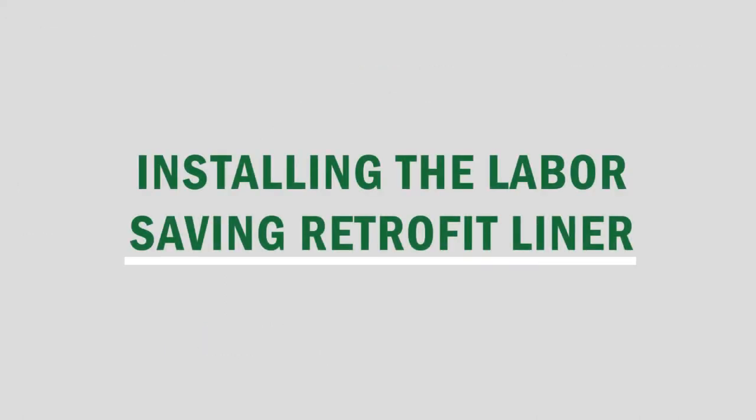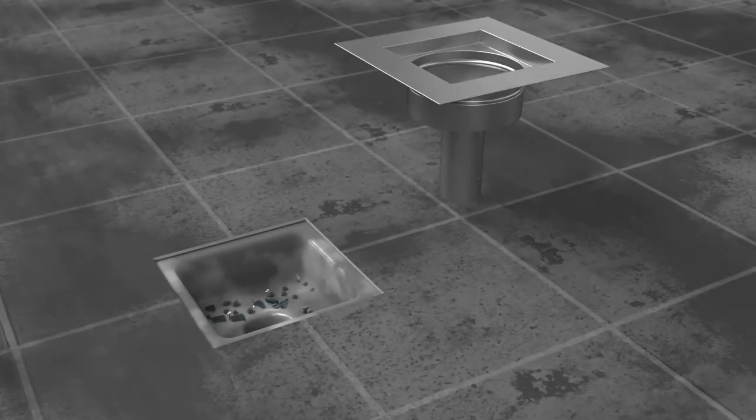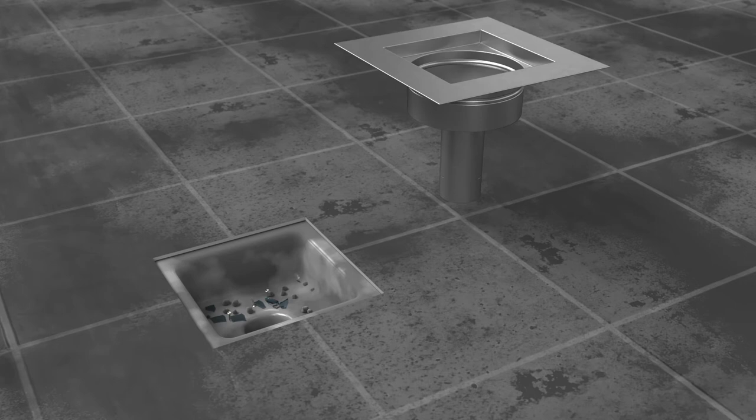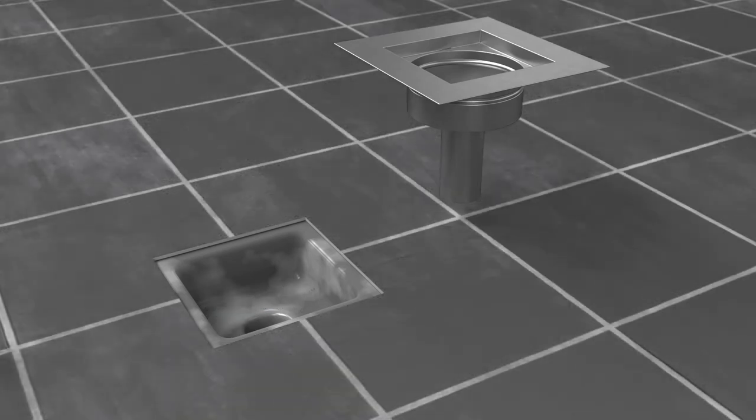The main advantage of a retrofit liner is that it can be easily installed with virtually no downtime. A typical installation process looks like this: make sure that the entire existing floor sink and the immediate surrounding floor is cleaned and dried.